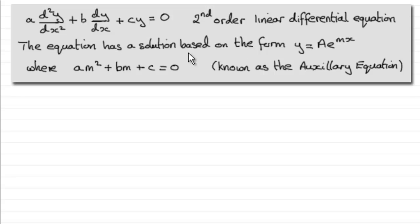And this equation has a solution based on the form y equals ae to the power mx, where a is a constant. And this value m is a root of this quadratic equation, am squared plus bm plus c equals zero, where a, b and c are the constants that we had in the equation here. And this quadratic equation is known as the auxiliary equation.